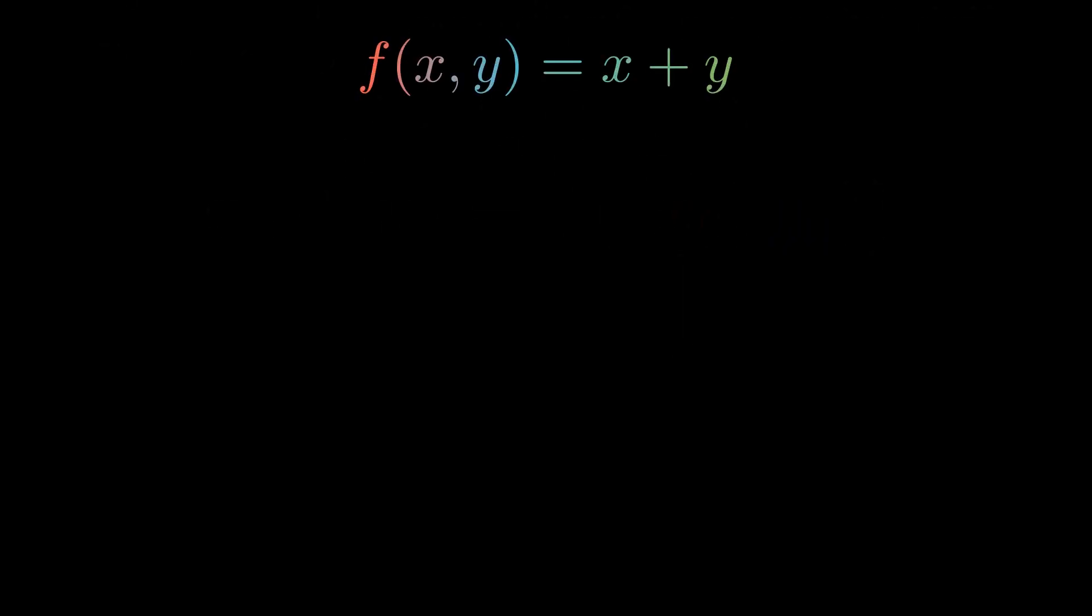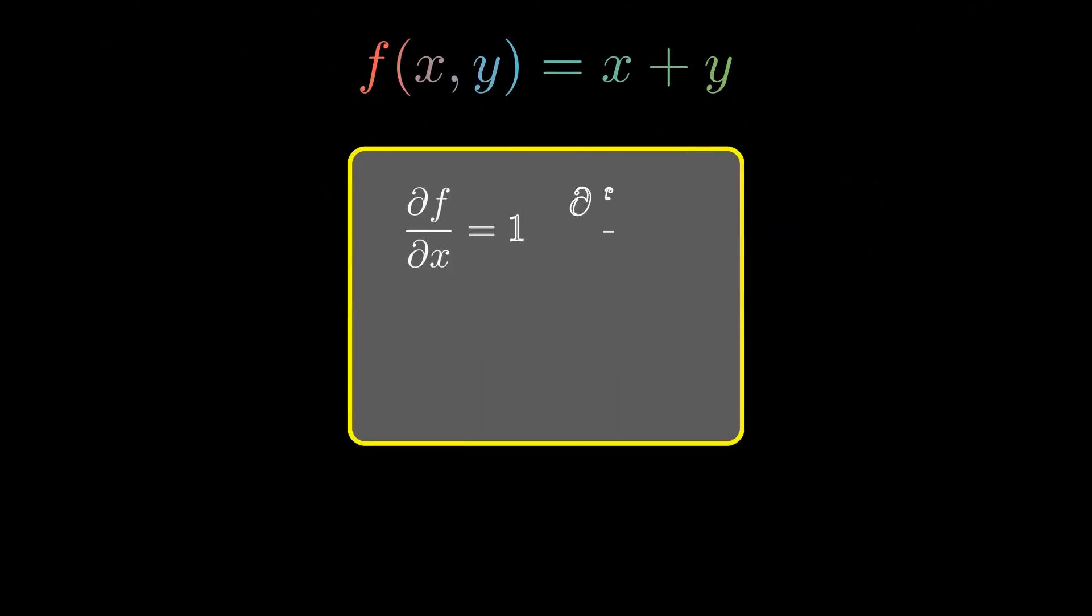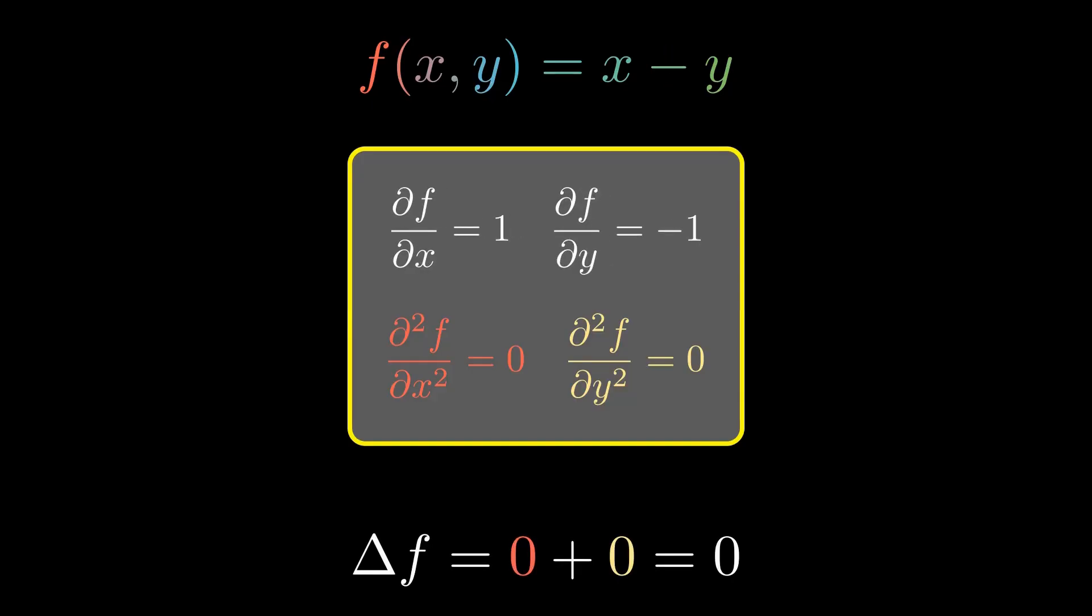Now everything fits together. The functions we used in the tables, addition, subtraction, multiplication, are all harmonic. And that's why their boundary average equals the central value.